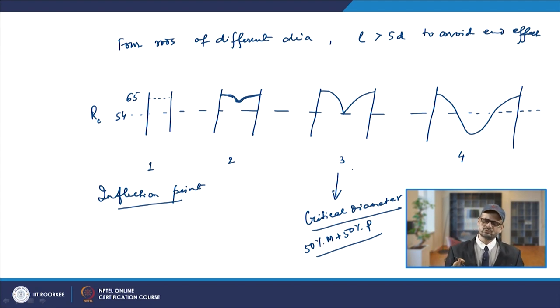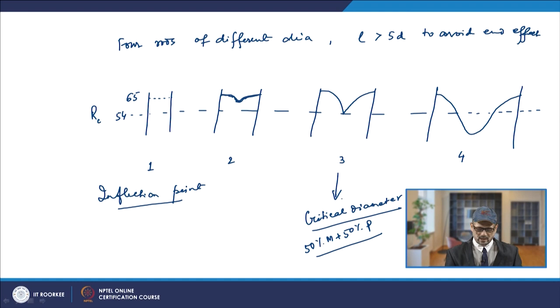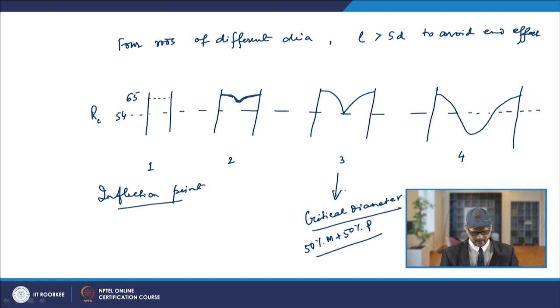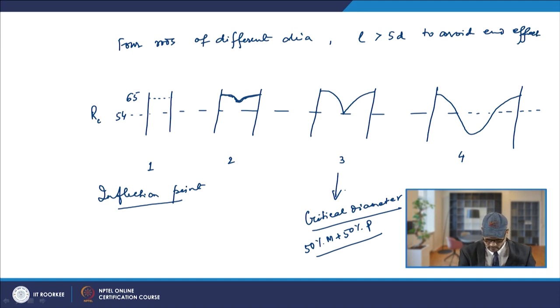The quenching medium also plays a role: we can have different types of quenching media, and the severity of the quenching medium is different for each. The critical diameter defined in this experiment depends upon the composition as well as the austenitizing temperature of the steel, and there is also an effect of the quenching medium. Grossman again defined these quenching media and also defined the ideal critical diameter corresponding to each quenching medium.